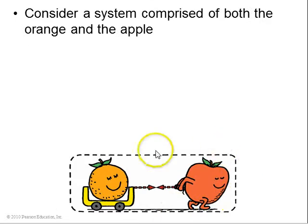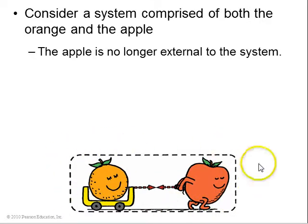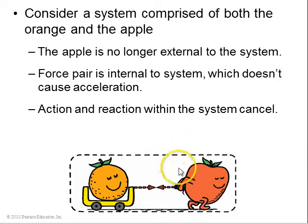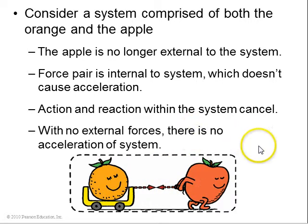So what if you actually consider the system to be the orange and the apple? So now the apple is part of the system, and these are now internal forces. So if the apple pulls the orange, these two forces will cancel. All that could happen is maybe the apple might accelerate to the left, the orange might accelerate to the right, but the whole system will not accelerate.